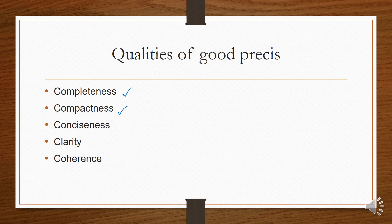The third quality is conciseness. In conciseness, we don't add any phrases from the original paragraph — no simile, metaphor, literary device, or example. We add only the main points in the précis, and we don't repeat any word or use synonyms unnecessarily.